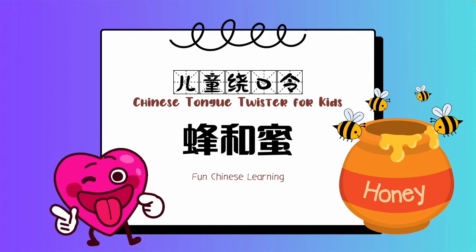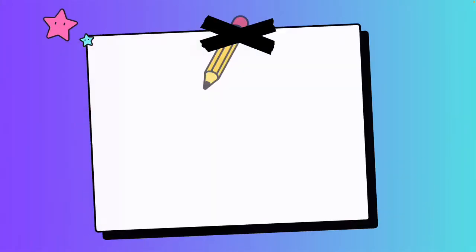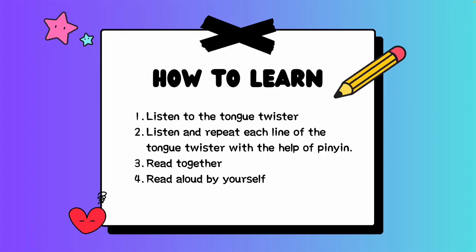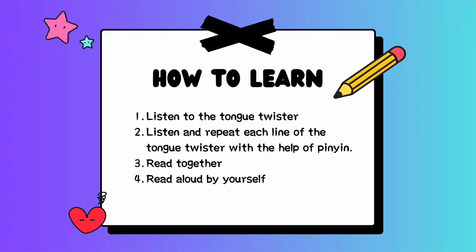中文儿童绕口令：风和蜜。How to learn? Step 1, listen to the tongue twister.